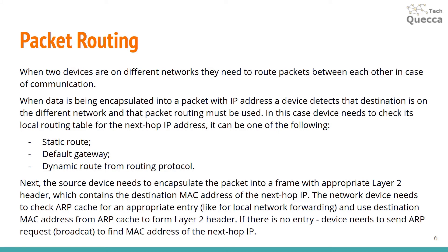Packet routing: when two devices are on different networks, they need to route packets between each other. When data is encapsulated into a packet with an IP address, the device detects the destination is on a different network and packet routing must be used. In this case, the device checks its local routing table for the next-hop IP address — it can be a static route, a default gateway, or a dynamic route from a routing protocol. The source device then encapsulates the packet into a frame with the appropriate layer 2 header containing the destination MAC address of the next-hop IP, using the ARP cache. If there is no ARP entry, the device sends an ARP request to find the MAC address of the next-hop IP.